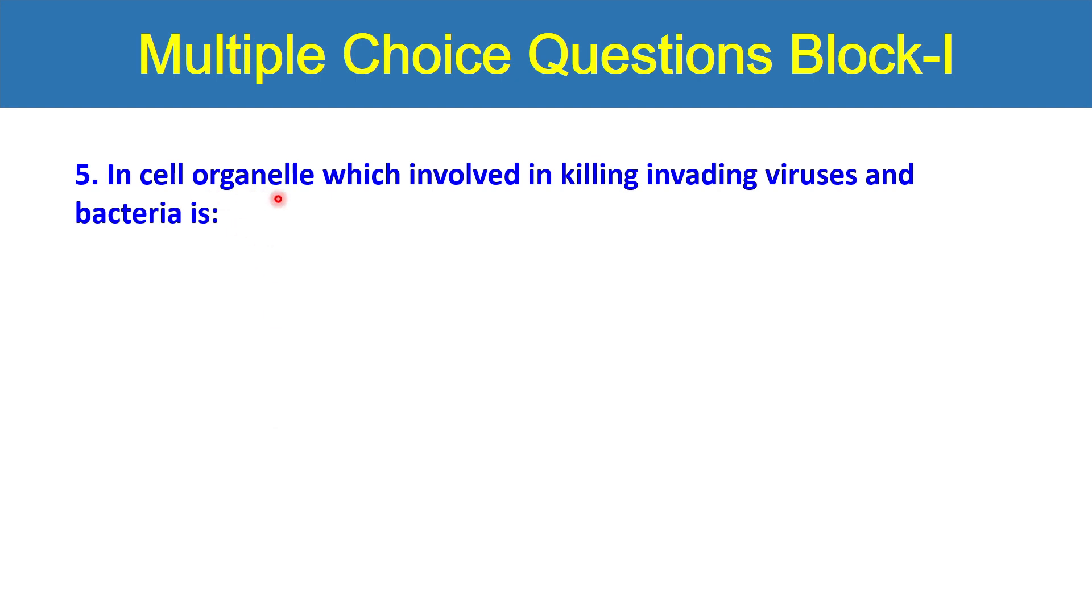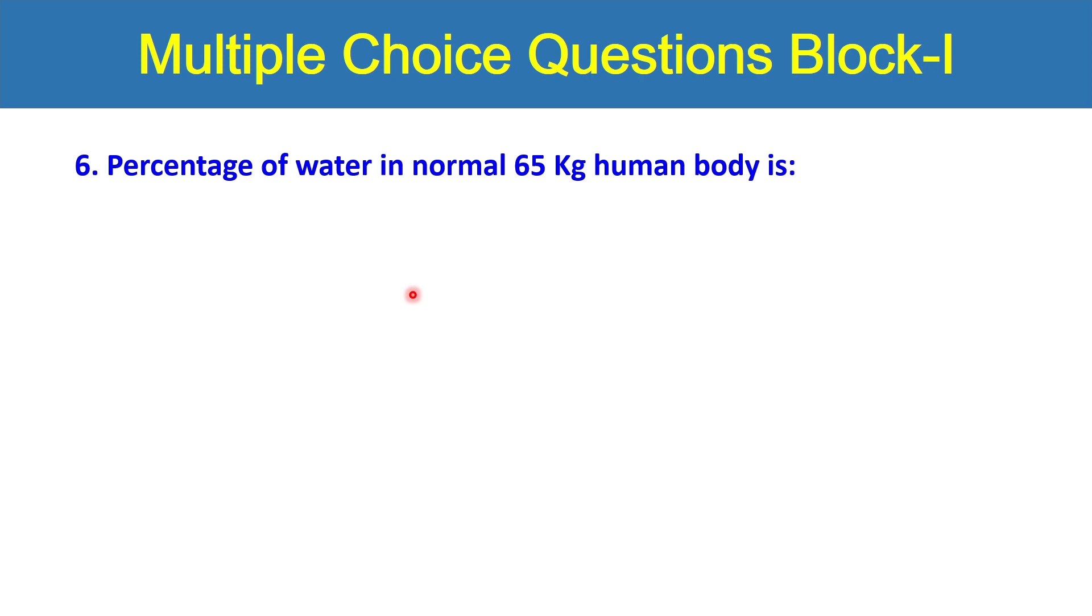Next, the cell organelle which is involved in killing invading viruses and bacteria is lysosomes, ribosomes, nucleus, Golgi apparatus or mitochondria? Question number six: percentage of water in normal 65 kg human body is 40 percent, 35 percent, 60 percent, 75 percent or 10 percent? You are required to write down if the answer is A, simply write A or you can write A and 40 percent and then you will compare your answer with the provided key at the end.